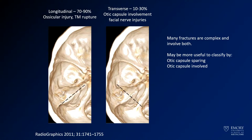You certainly also want to identify whether there's an extension of the fracture into the internal ear structures — so if it goes into the cochlea or semicircular canals, you want to know whether those are involved.